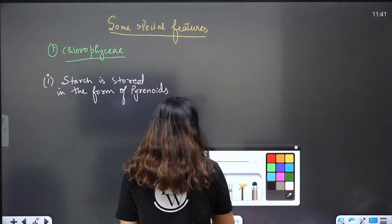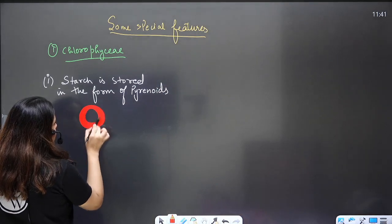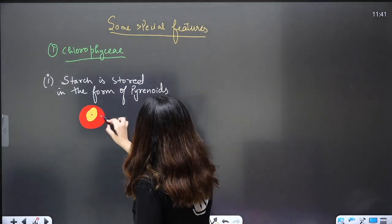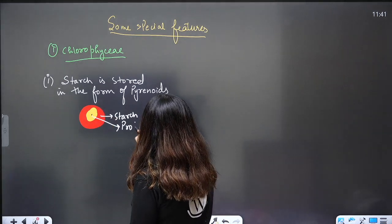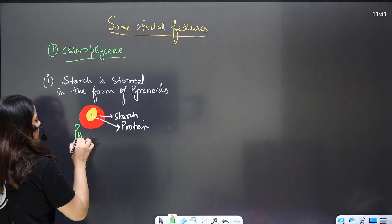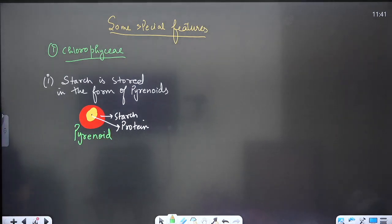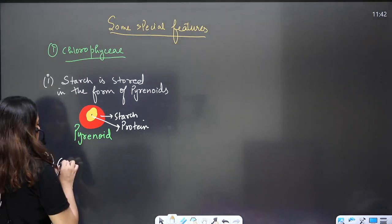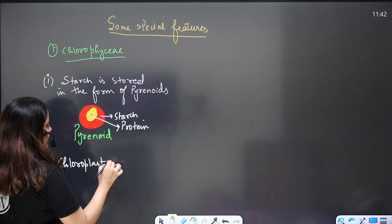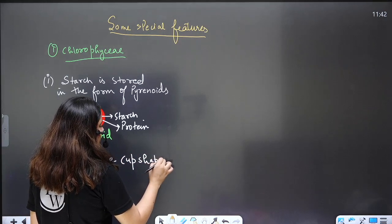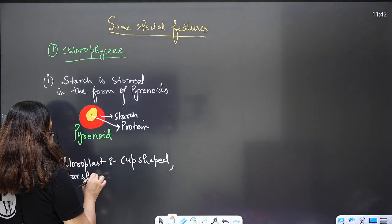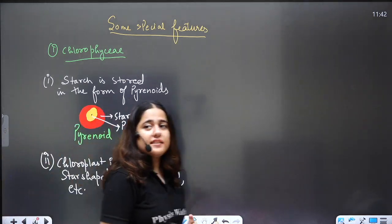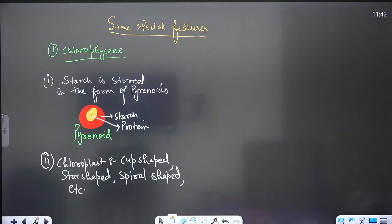Pyrenoids are structures that have starch in the periphery and protein in the center. They are present inside the chloroplast. In Chlorophyceae, the chloroplast can have various shapes — it can be cup-shaped, star-shaped, spiral-shaped, etc. So chloroplast can have various shapes in members of Chlorophyceae.